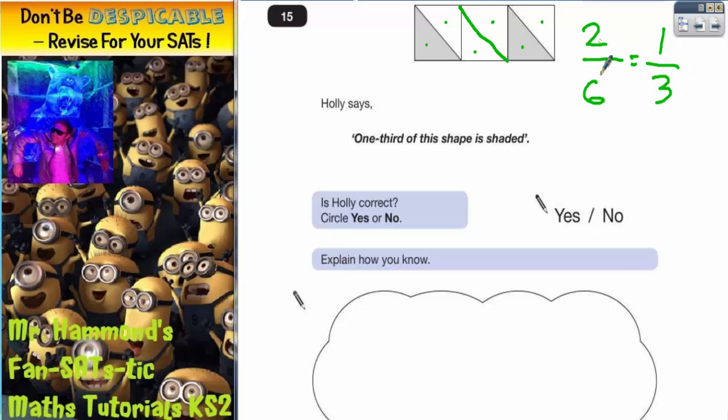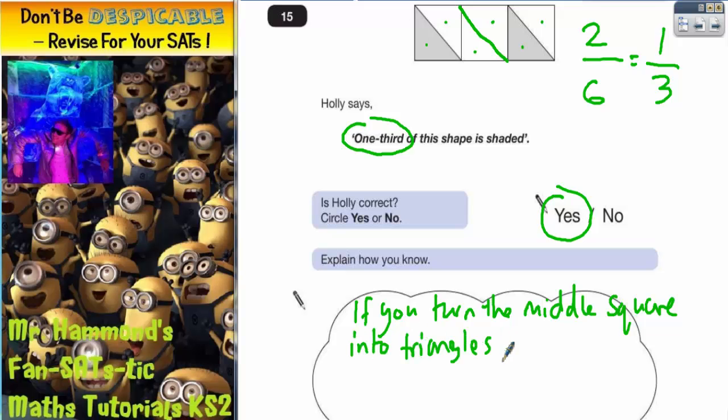So actually if you half both the numbers you will come up with an equivalent fraction. So two sixths is equivalent to one third which again matches what she's saying here. One third of the shape is shaded. So again you would circle yes and your explanation would say something like this. If you turn the middle square into triangles it is out of six. Two are shaded and two sixths is equivalent to one third.